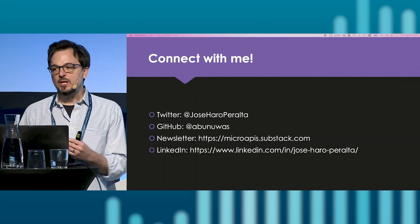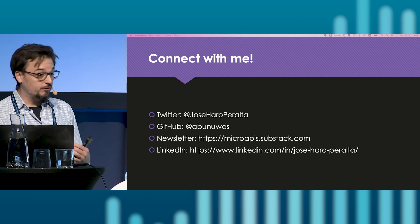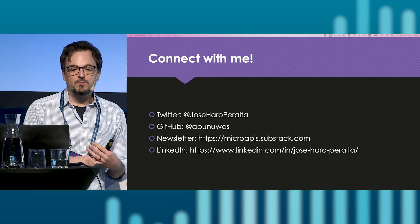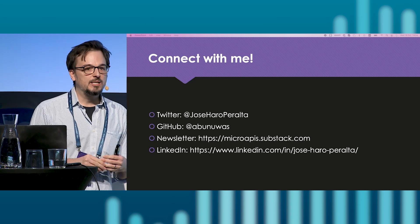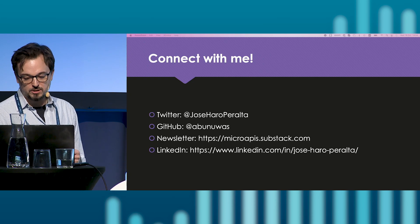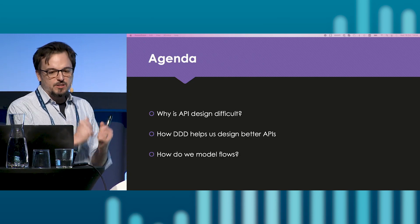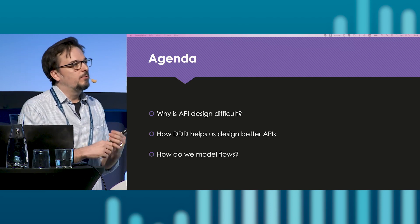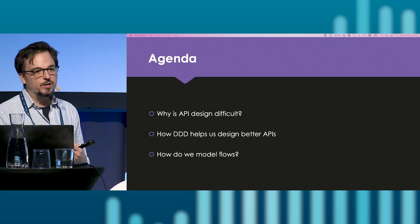If you're interested in microservices and APIs — and I'm sure you are because you are here — and if you're interested in my content, you can follow me on Twitter or LinkedIn, or subscribe to my newsletter on SuperStack for micro APIs. Today we're going to talk about API design, specifically modeling: we'll explore the reasons why it is so difficult to get it right, what are the consequences of bad designs, and how domain-driven design can help us.